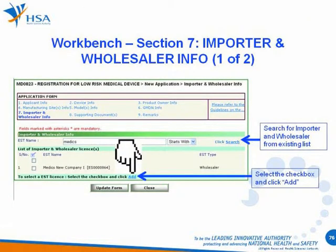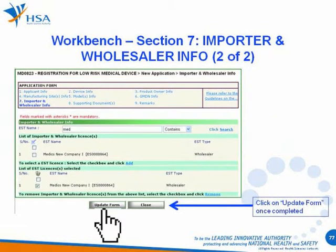You can key in the optional EST name field before clicking on the Search button to display the list of importer and wholesaler dealer names based on the search category. Importers and wholesalers who have valid licenses with HSA will be listed here. Multiple dealer names can be chosen from the list of importer and wholesaler license search results. Once the correct dealer names are selected from the list, click on Add then click the Update Form button to include selected companies into the form.